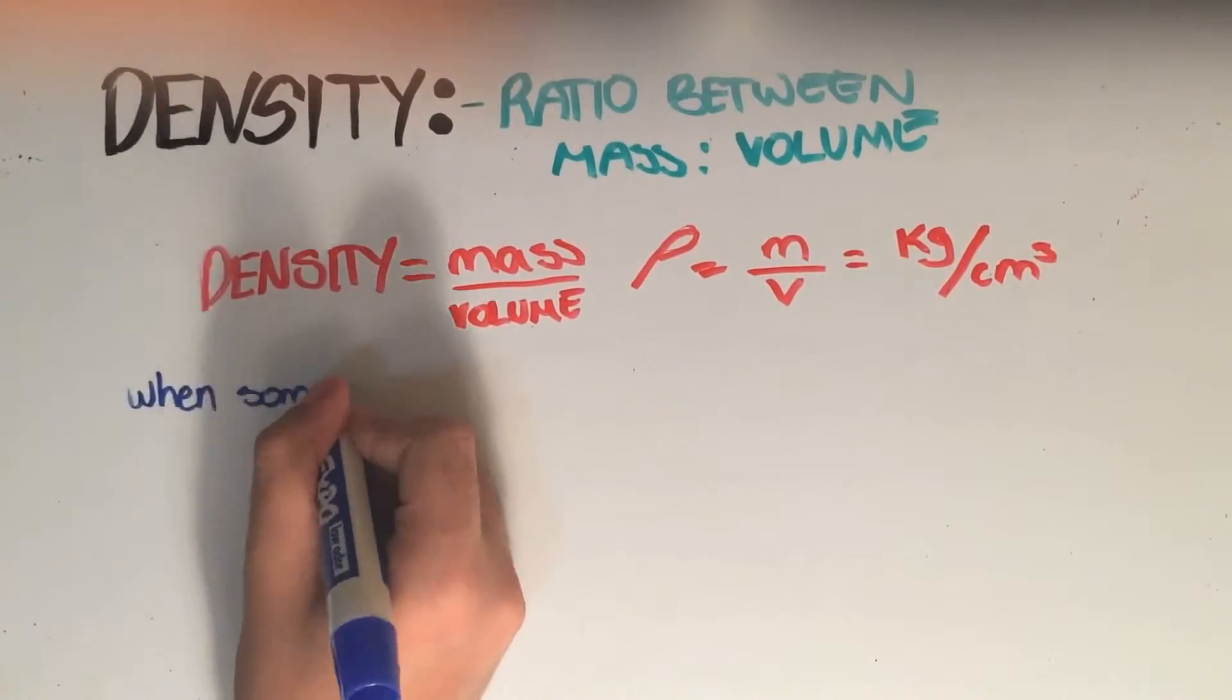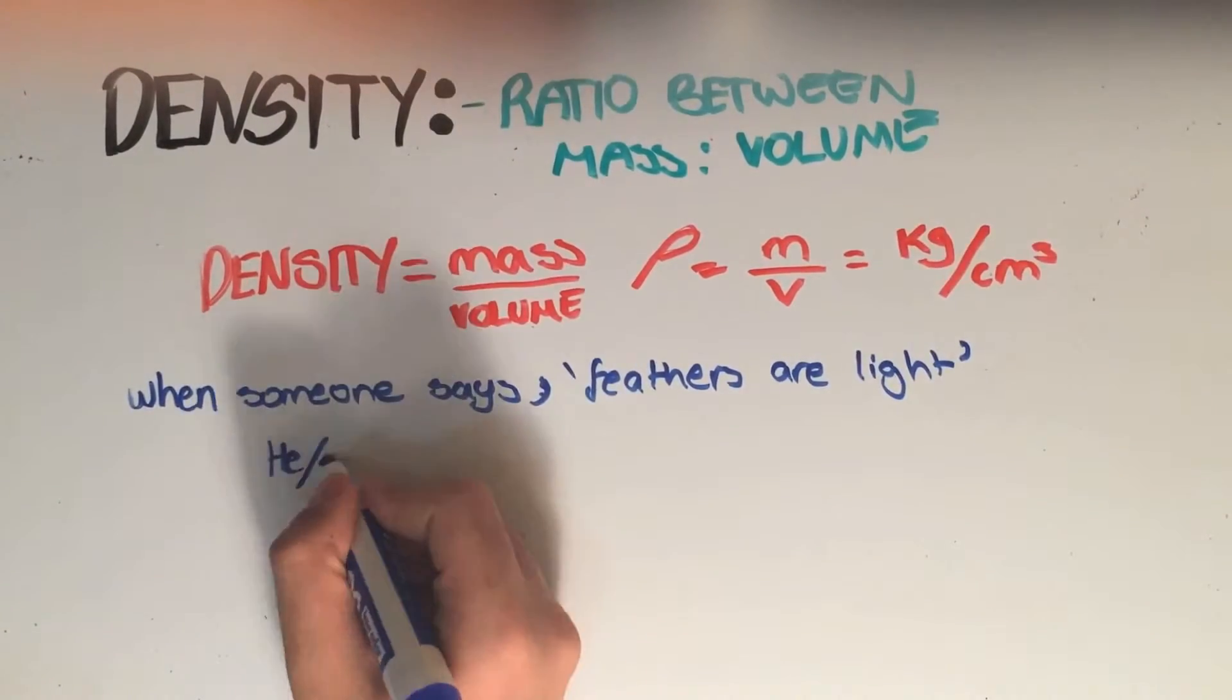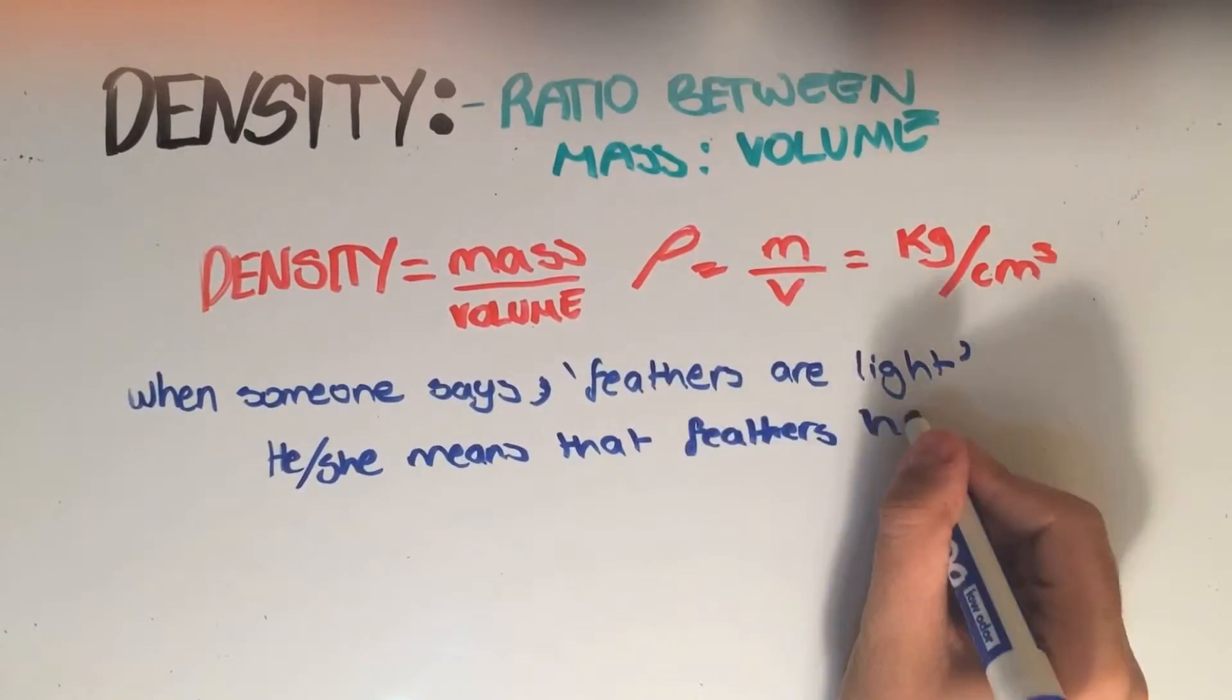When people say feathers are light, they're actually referring to the fact that it has a low density. This means that it has a relatively large volume compared to its low mass.